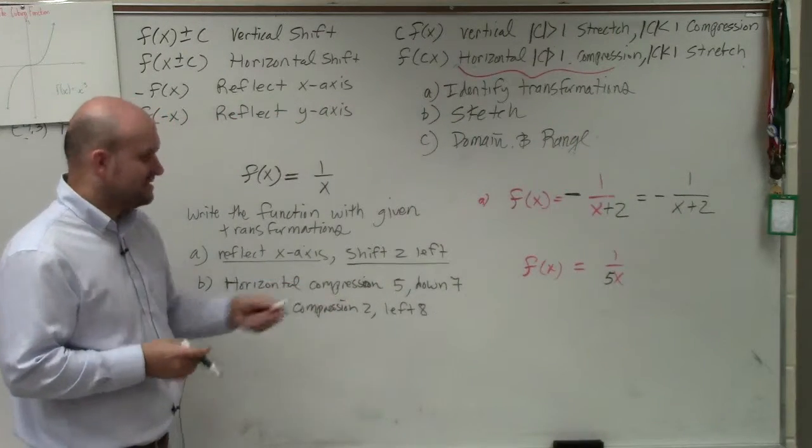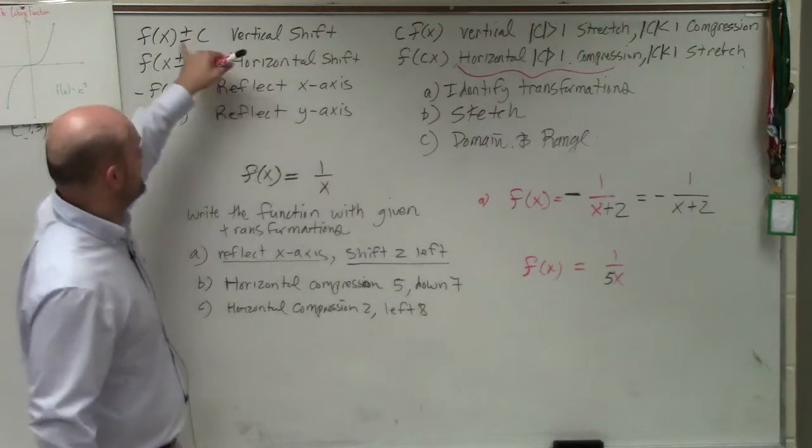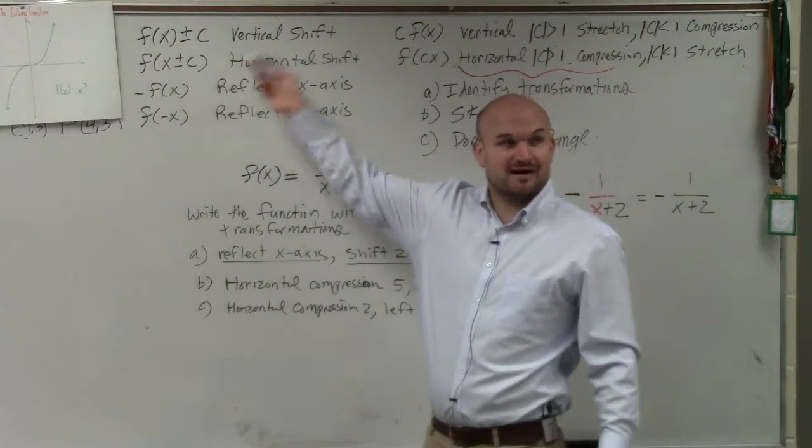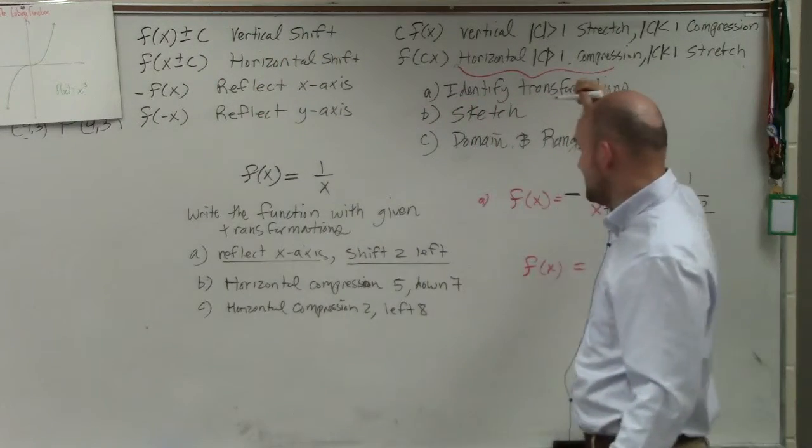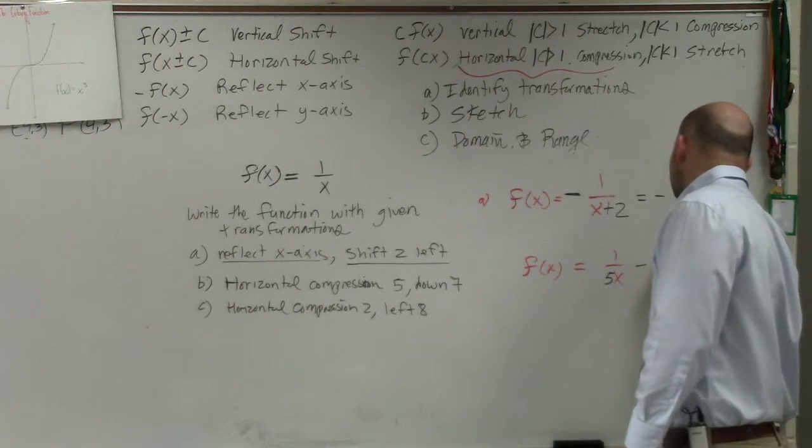Then it says I'm going down 7. So therefore I need to—when I'm going down, that means it's a vertical. Since it's vertical, going down, I need to subtract on the outside. So that's minus 7.